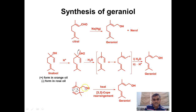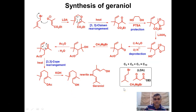The third synthesis involves a Cope rearrangement — a 3,3-sigmatropic rearrangement. An isolated diene substrate undergoes this 3,3-sigmatropic rearrangement and we get a geraniol molecule.